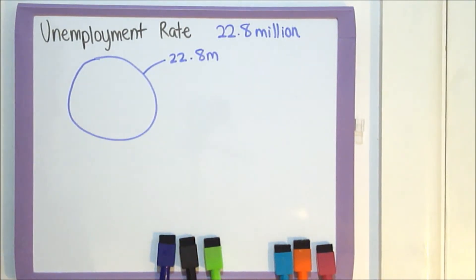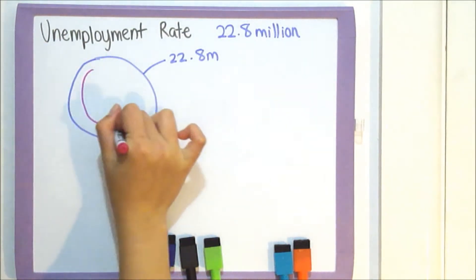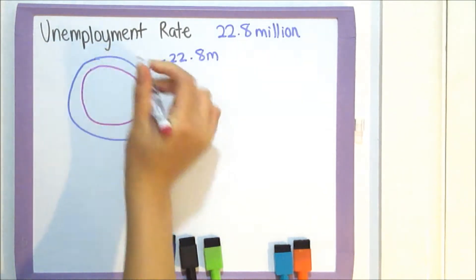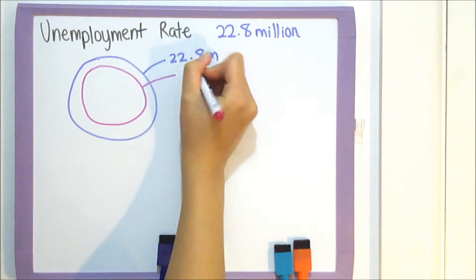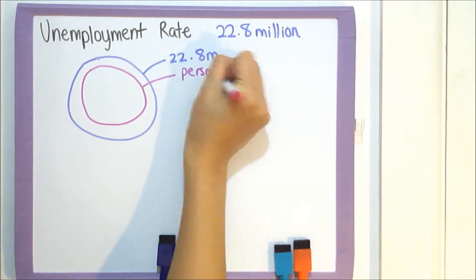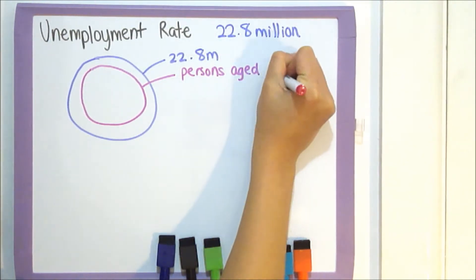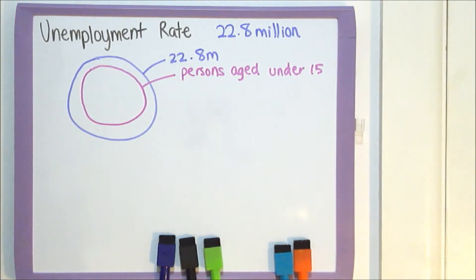Since we're calculating the unemployment rate, we don't include people aged 15 or under, because it's not like you're going to see a little infant toddler having a job. So they get removed from the calculation — persons aged under 15. In America, I think it's people aged 16 and under.